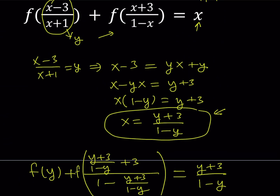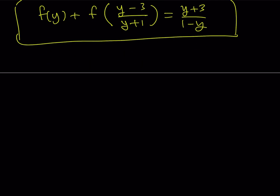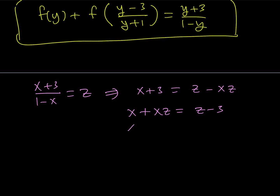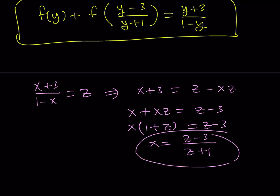Now we're going to use the same approach, but this time with the second expression — let's go ahead and replace that part with z. So the next step is: x plus 3 over (1 minus x) equals z. Cross-multiplying gives x plus 3 equals z minus xz. Collecting x terms on the same side: x plus xz equals z minus 3. Factor out x to get x times (1 plus z). Finally, divide both sides by (1 plus z), and you'll get x in terms of z. Now we're going to substitute this into the original expression.